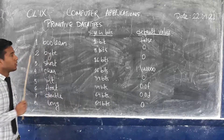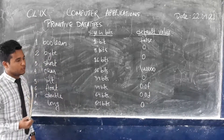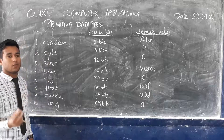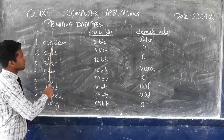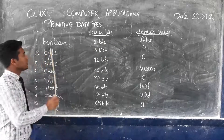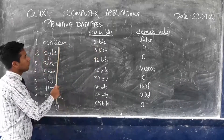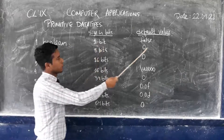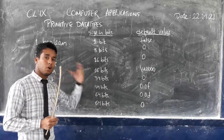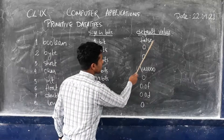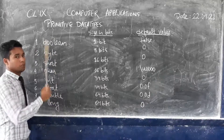The first one is boolean. Boolean deals with true or false. In today's class I am explaining only the size and the default value. The size of boolean in bits is 1 bit, and the default value is false. Since it deals with true or false, the default value is considered to be false. This is the default value of the boolean data type.